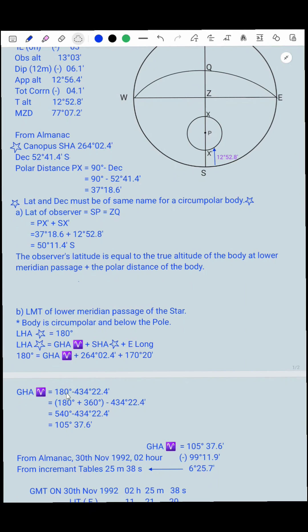180 degrees equals GHA Aries plus SHA, which we have taken off from the Almanac pages, which is 264 degrees 02.4 minutes plus 170 degrees, that is longitude 170 degrees 20 minutes. From this equation we find out GHA is equal to 180 degrees minus. If we add together 264 degrees 2.4 minutes plus 170 degrees 20 minutes, we got value as 434 degrees 22.4 minutes. And since 180 is less, so before subtracting we add 360 degrees. 540 degrees minus 434 degrees 22.4, we got GHA of Aries as 105 degrees 37.6.